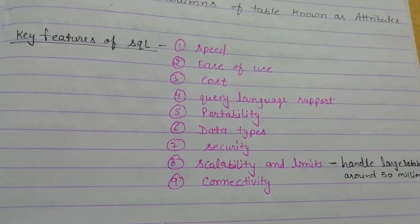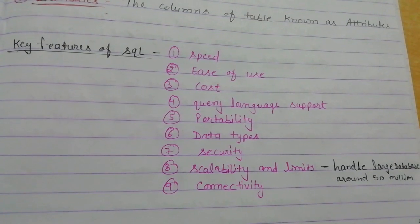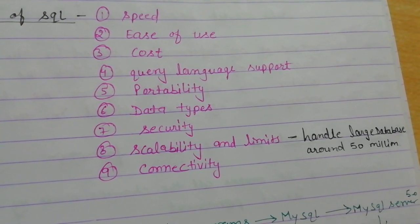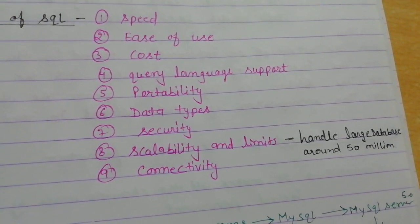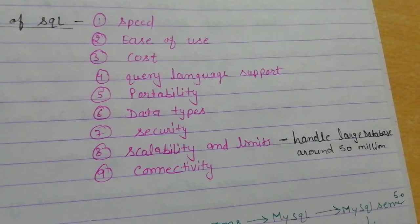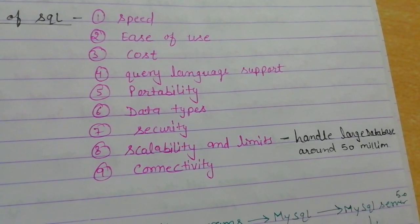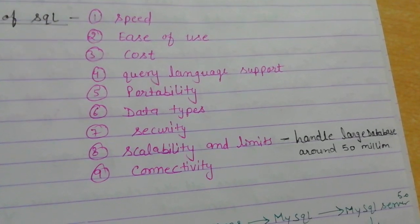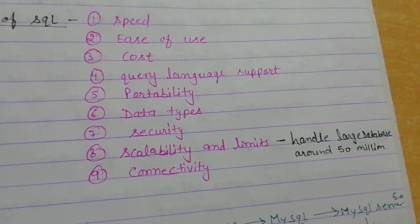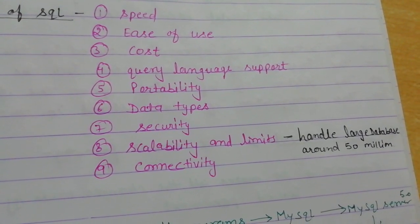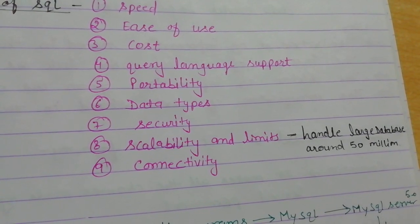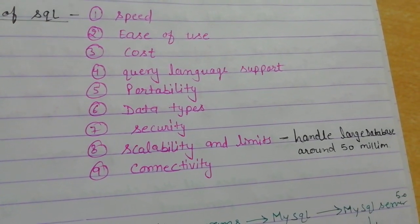Large companies invest their database in a secure manner. The fifth point is scalability and limits — scalability means a large amount of data; we need to be able to manage the database. One database could store as much as 50 million or more records in table format. Connectivity — we can easily connect data to any server or any front-end language. That's why MySQL is in such popular demand.